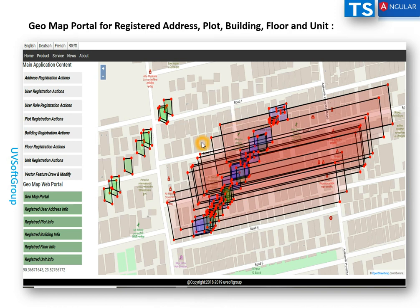I'm simulating my functionalities with dummy data — programmatically building the plots, buildings, addresses, units, and floor information. I cannot give a real example because of ownership and legal issues. That's why the data is programmatic; it doesn't matter where it's located. You may see buildings located inside roads — that's because I cannot give you the real shapes of the buildings.